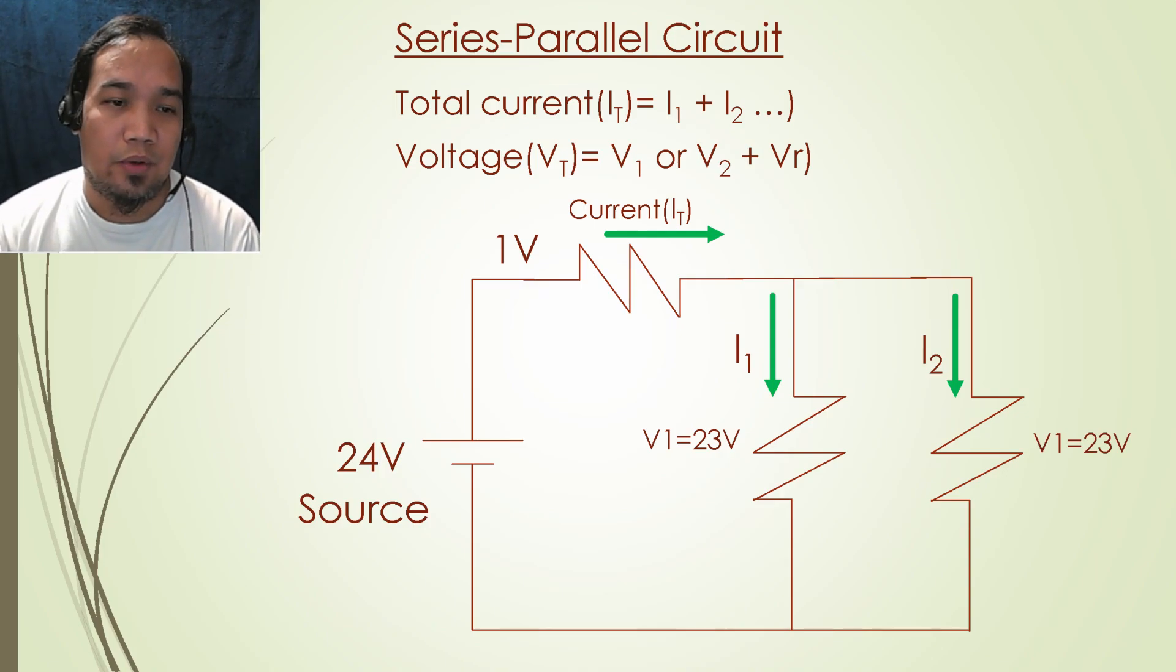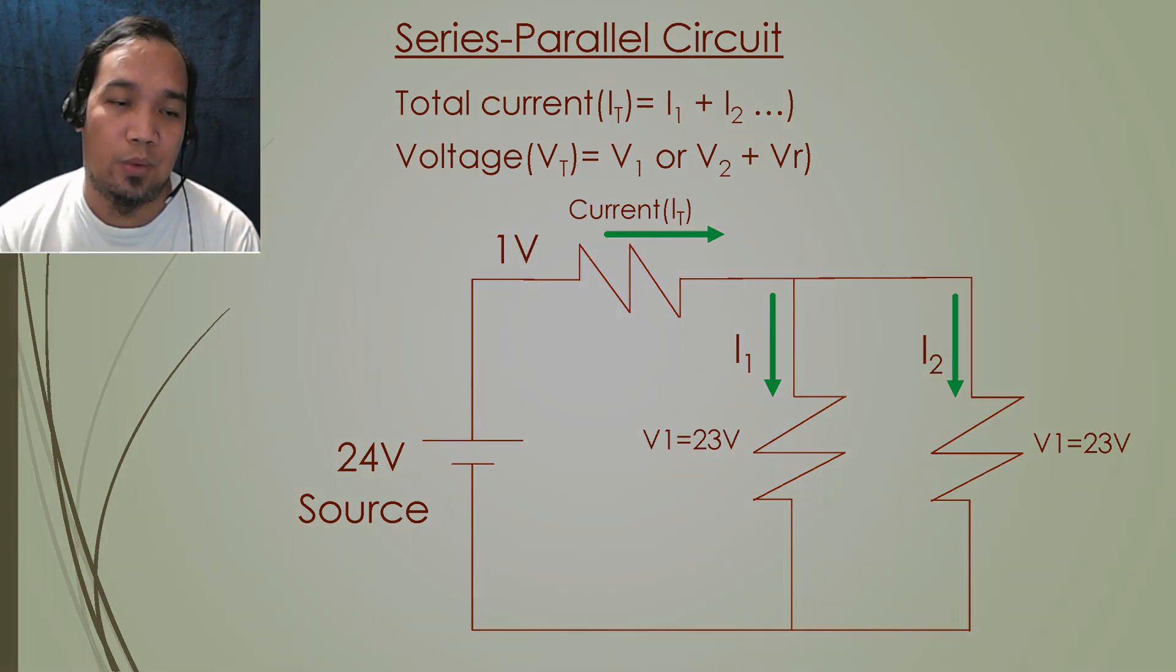And now for series-parallel circuit, the total current can be calculated by adding each current, while the total voltage can be done by adding the voltage from conductor internal resistance and either V1 or V2 which is equal.